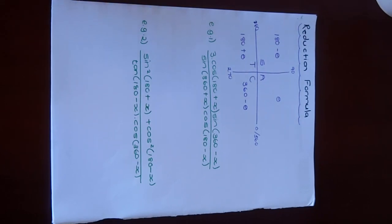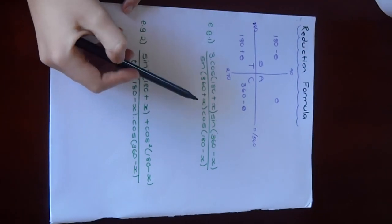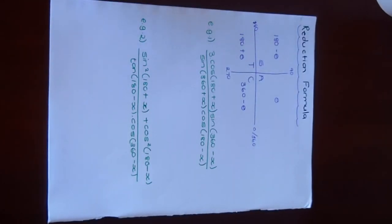What they basically do is they give you a sum that looks like this: 3 cos 180 plus x. There's extra numbers in these brackets which we do not want, we want to simplify these things.